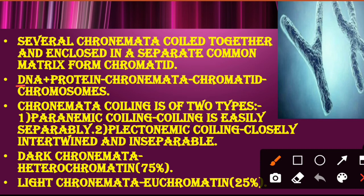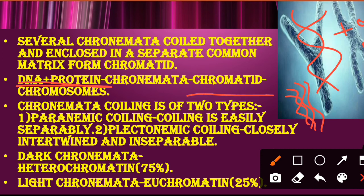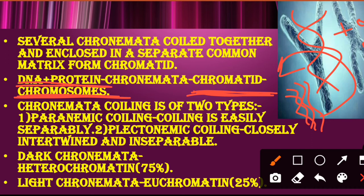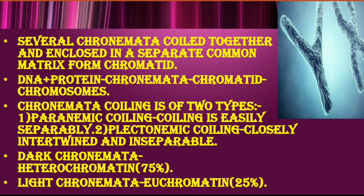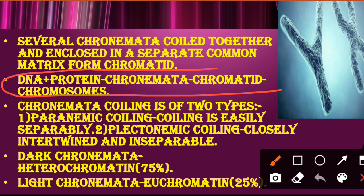DNA plus protein — when DNA mixes with protein, it forms thin thread-like structures. These thin structures are our chromonemata, and when they densely coil together, they form chromatids — which are the actual arms of a chromosome. Then when chromatids come together, they form the chromosome. So this is the complete structural chain of a chromosome — this is the most important concept. If you remember this, you will never forget the chromosome structure.